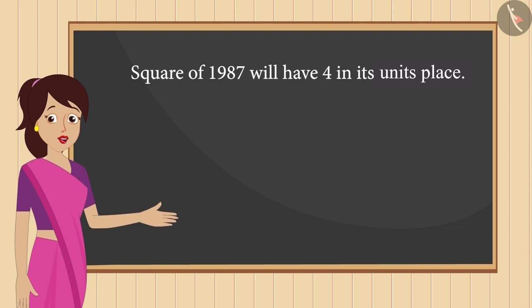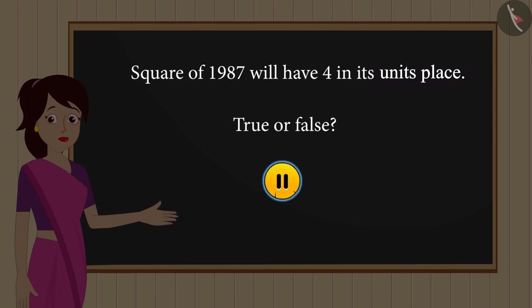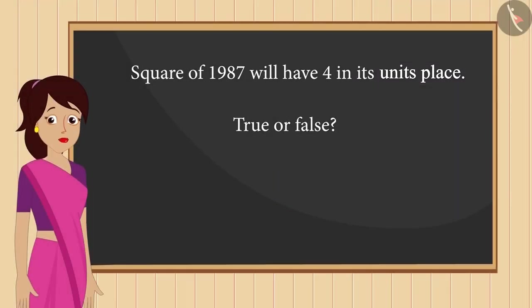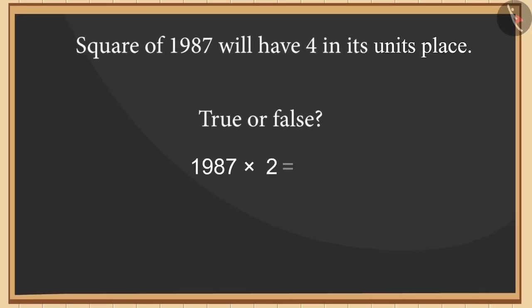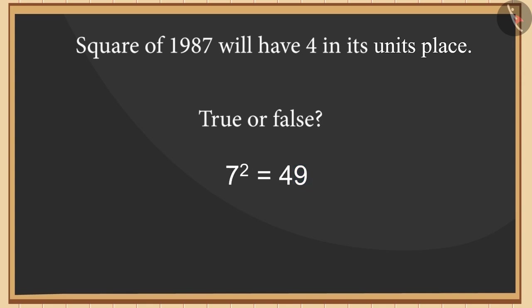Let us now see the next statement. Square of the number 1987 will have 4 in its units place — true or false? You can pause the video here and think of the answer. Sometimes many people multiply a number by 2 in order to get its square. If you multiply this number by 2, you will get 4 in the units place, which is wrong. The given number has 7 in its units place, and we know that 9 comes in the units place of the square of 7. This means that 9 will also come in the units place of the square of 1987. Therefore, this statement is false.